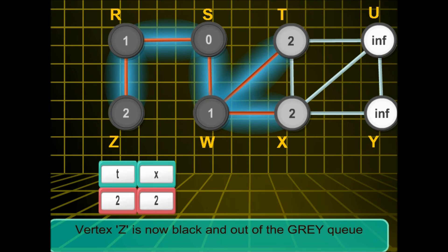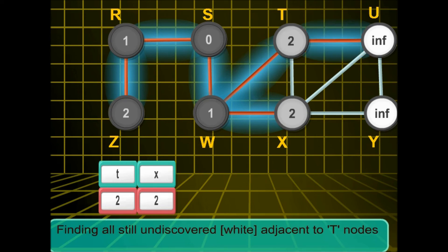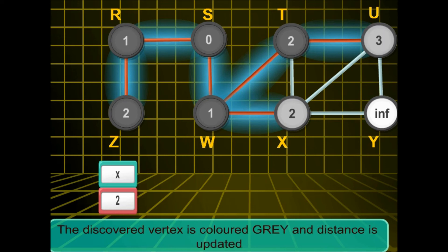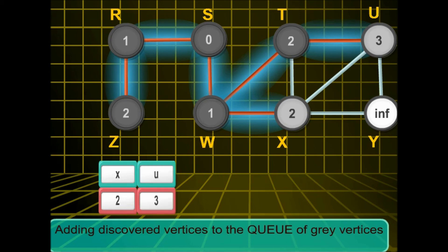Now the next to be dequeued is t. We find u to be adjacent to t. t is dequeued and marked black, and then u will be enqueued.